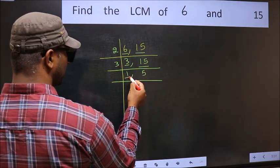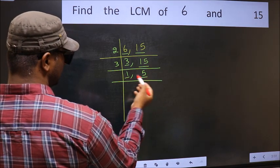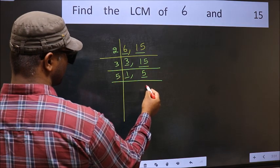Now we got 1 here so focus on the next number 5. 5 is a prime number so 5, 1 is 5.